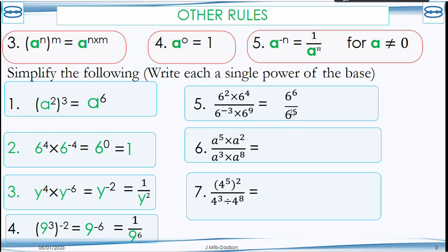So when you're supposed to divide indices, you subtract the powers. That gives you 6 to the power 0. Don't stop there, remember this. So the final answer is 1.